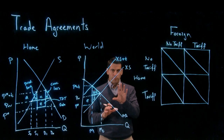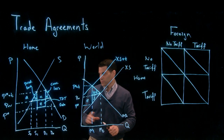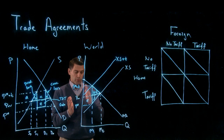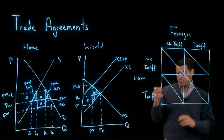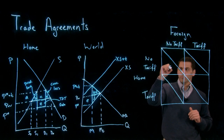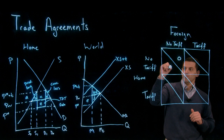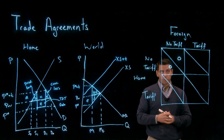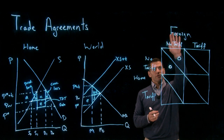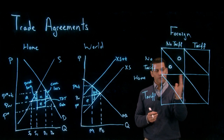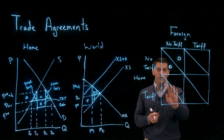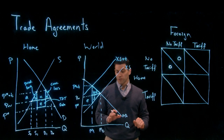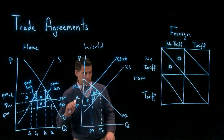Starting from the default of free trade: when both countries choose no tariff, the gains or losses compared to free trade are zero — neither country is moving away from free trade. Now, what happens if foreign doesn't impose a tariff but home does? We go back to our earlier analysis: if home imposes a tariff and foreign does not, home is going to gain e minus b and d.